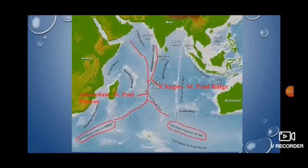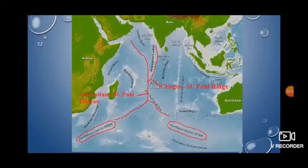The ridge further widens to almost 1,600 kilometers between 30 degrees to 50 degrees south latitudes, where it is known as the Amsterdam-Saint-Paul Plateau. The central ridge bifurcates near 50 degrees south latitude. The western branch is known as the Gaussberg Ridge, extending in a northwest to southeast direction, and the eastern branch is known as the Indian-Antarctic Ridge.